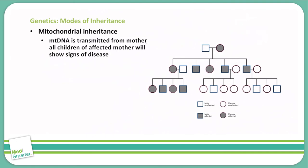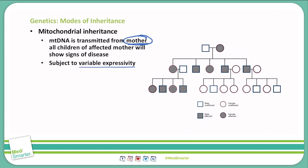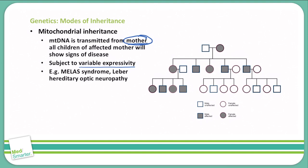Finally, we come to mitochondrial inheritance. Mitochondrial DNA is transmitted from the mother and the mother only. All children with an affected mother will show signs of this disease. If a father has this disease, he will not pass it on to his children at all. There is also potential for variable expressivity, so remember that. An example is MELAS syndrome — mitochondrial encephalomyopathy, lactic acidosis, and stroke-like episodes. We see lactic acidosis secondary to a failure of oxidative phosphorylation. Muscle biopsy often shows a red ragged fiber due to accumulation of diseased mitochondria in the subsarcolemma of the muscle fiber.